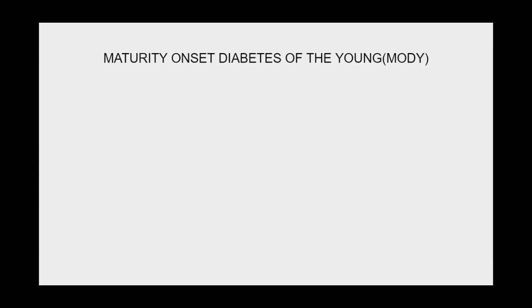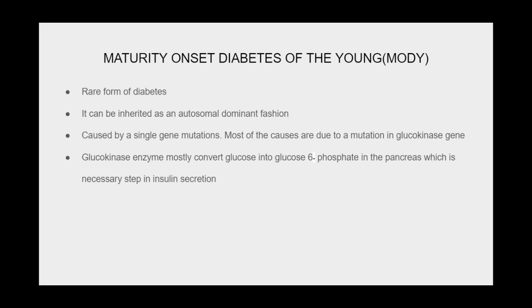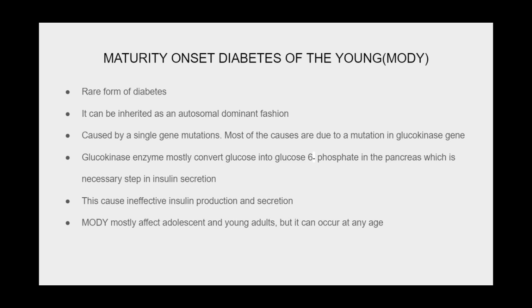Maturity onset diabetes of the young (MODY) is a rare form of diabetes that can be inherited in an autosomal dominant fashion, caused by single gene mutations. Most cases are due to a mutation in the glucokinase gene. The glucokinase enzyme primarily converts glucose into glucose-6-phosphate in the pancreas, a necessary step in insulin secretion, so this mutation causes ineffective insulin production and secretion. MODY mostly affects adolescents and young adults but can occur at any age, and like other forms of diabetes, it can cause all diabetes-related complications.